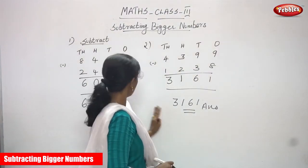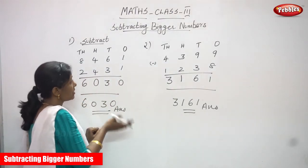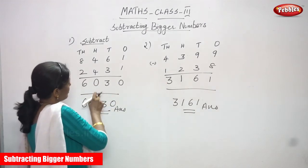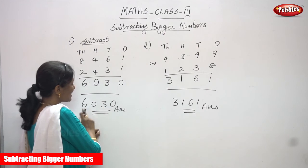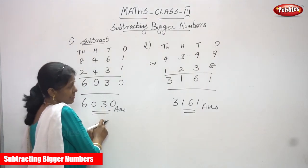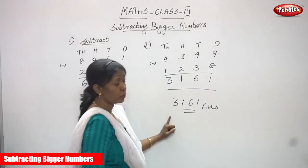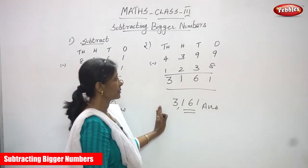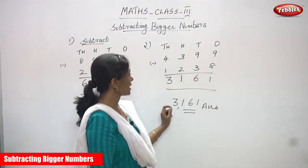So both sums are done. This is subtracting bigger numbers with no borrowing. I think you understand the sums very clearly. The first question answer is 6030. The second sum answer is 3161. These are the right answers for both questions.